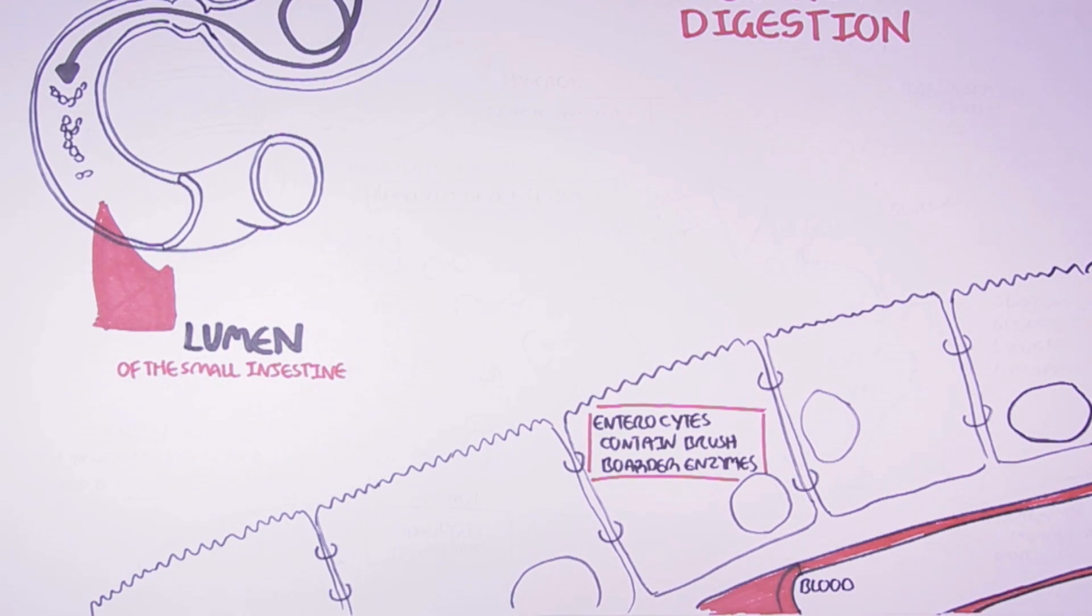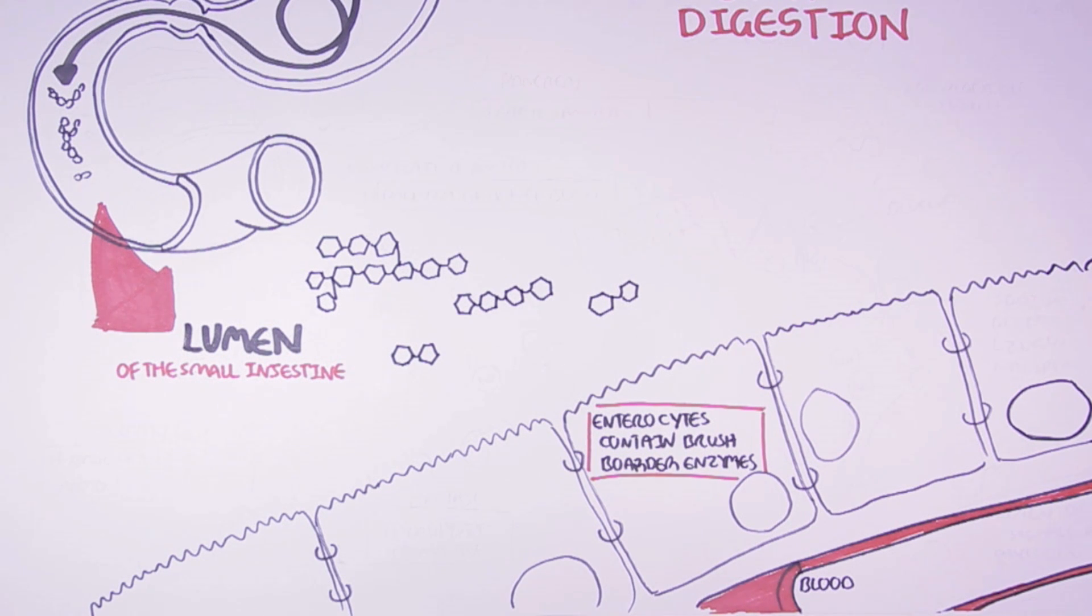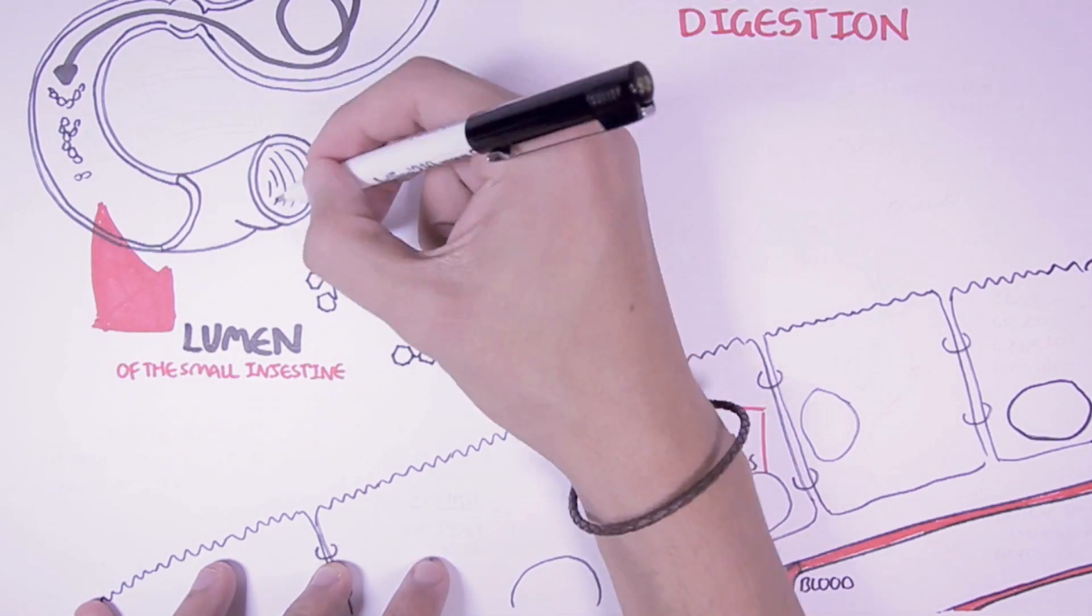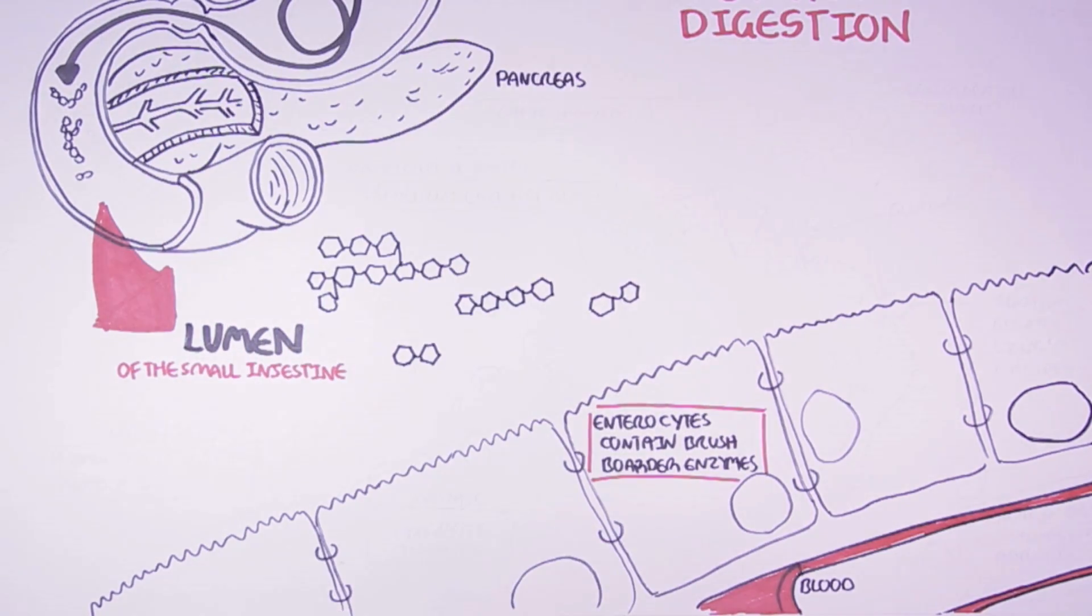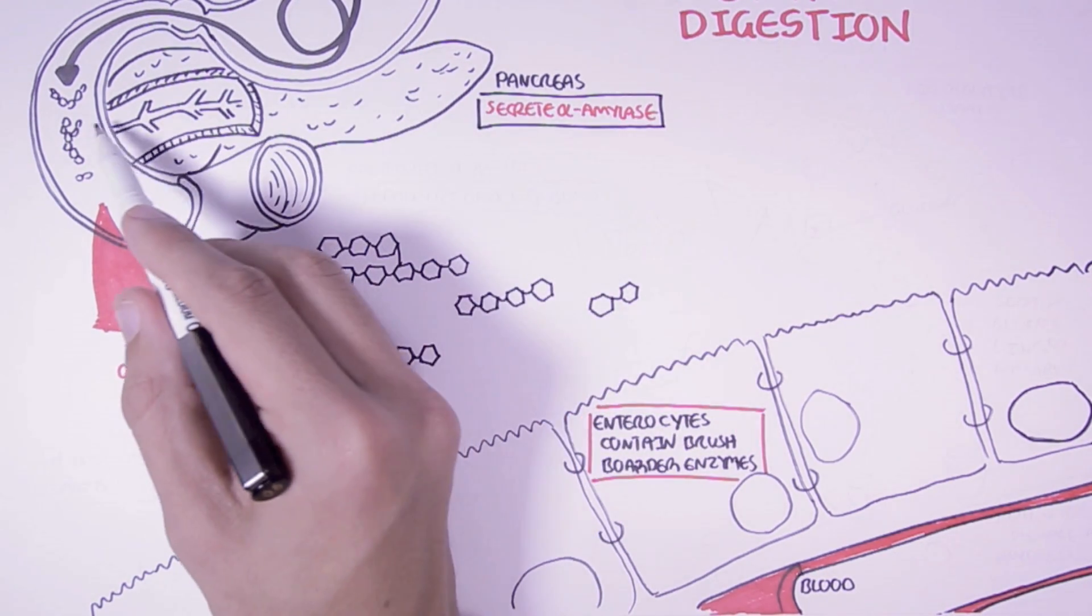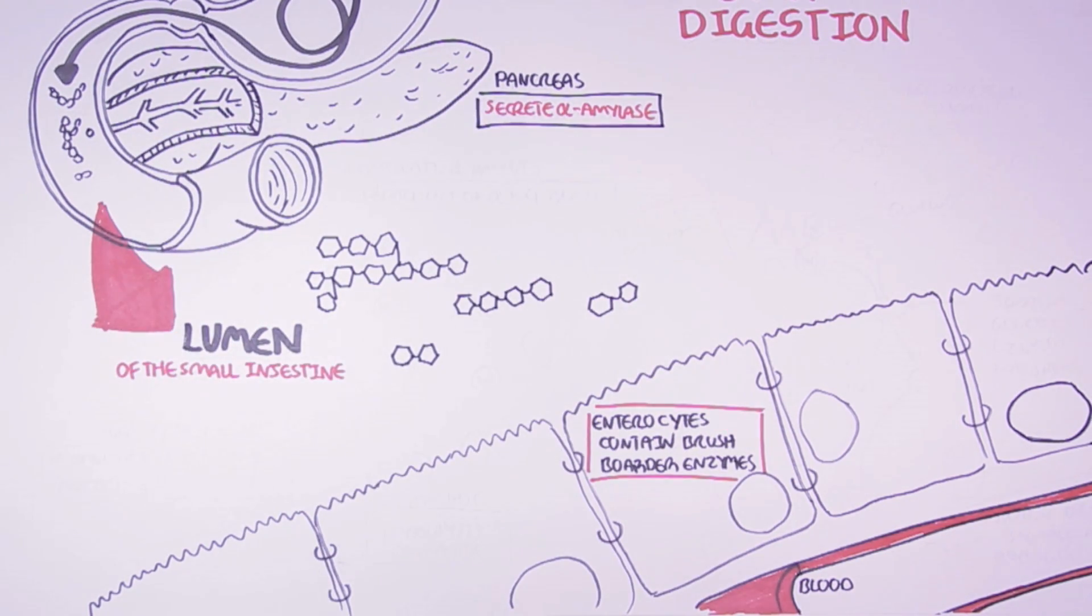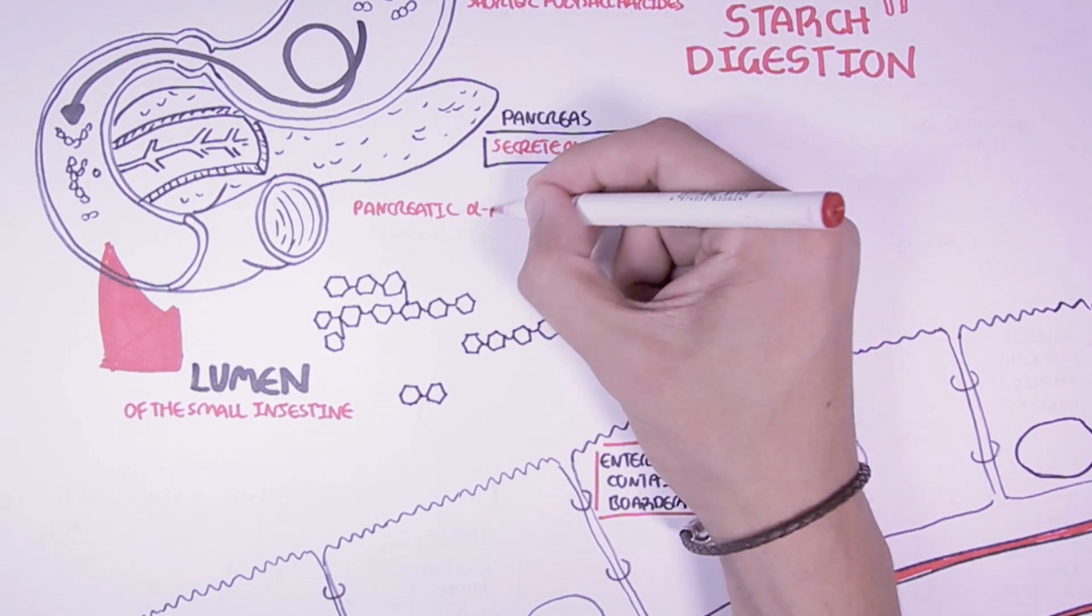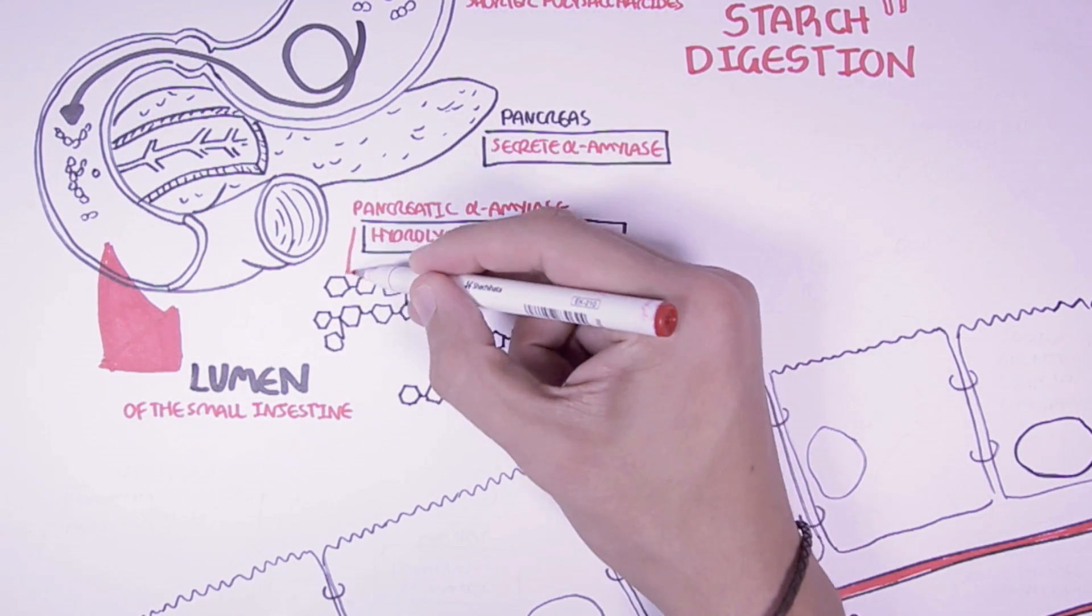So when starch reaches the small intestine, it is already in a partially hydrolyzed form, remember. Now when starch reaches the small intestine, another organ known as the pancreas, which is situated here, will begin to secrete alpha amylase. So there was alpha amylase secreted from the salivary glands and the pancreas. The pancreatic alpha amylase will be secreted into the small intestine where it will break down the alpha-1,2,4 glycosidic bonds, just as what the salivary amylase did. So pancreatic alpha amylase hydrolyzes the alpha-1,2,4 glycosidic bonds, breaking down the starch further.